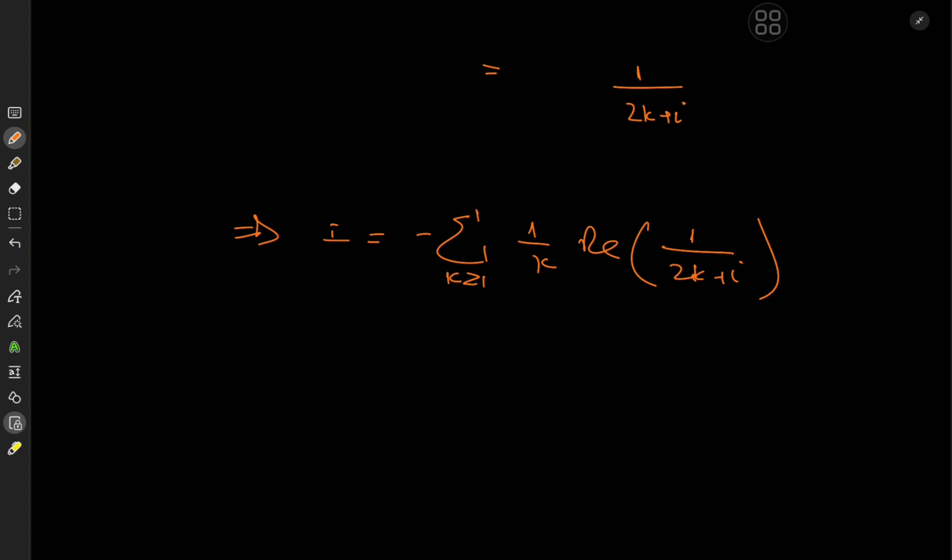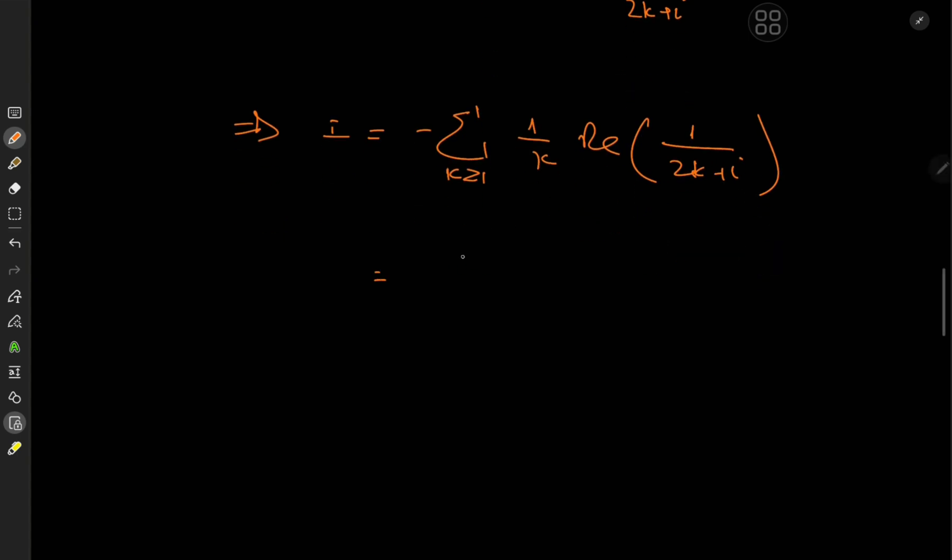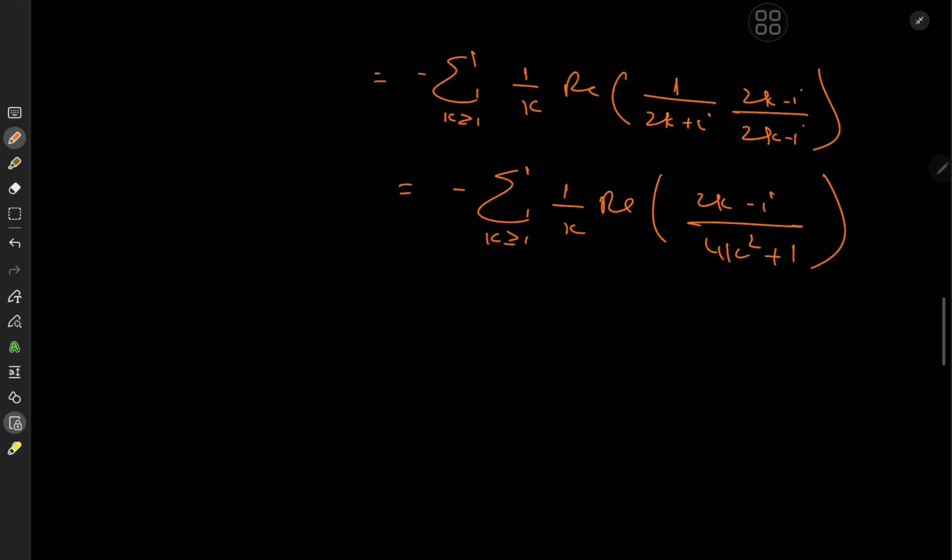And now we can separate this complex number into real and imaginary parts. So we have the negative of the sum over k of 1 over k times the real part of 1 over 2k plus i times 2k minus i over 2k minus i, just expanding by the conjugate. Negative sum over k of 1 over k real part 2k minus i over 4k² minus i², which is negative 1. So again, the negative signs cancel out.